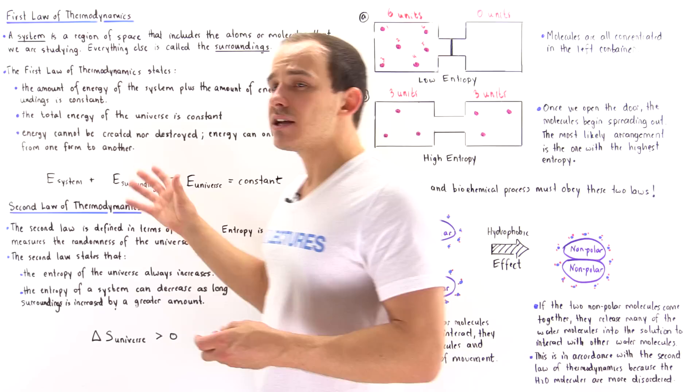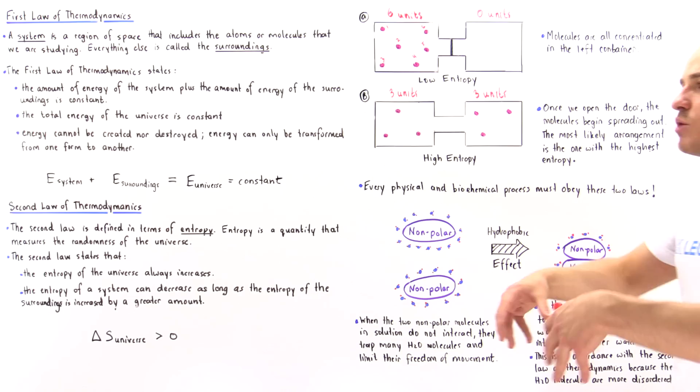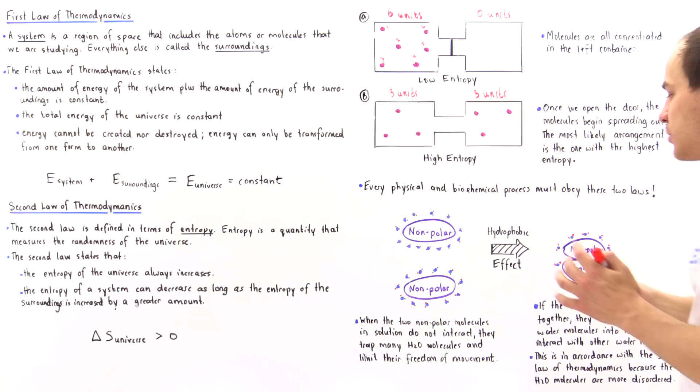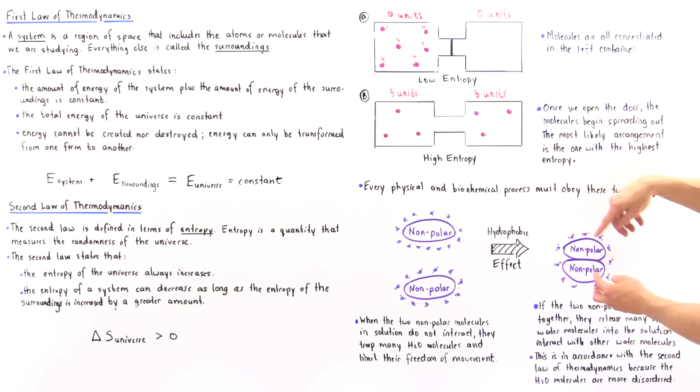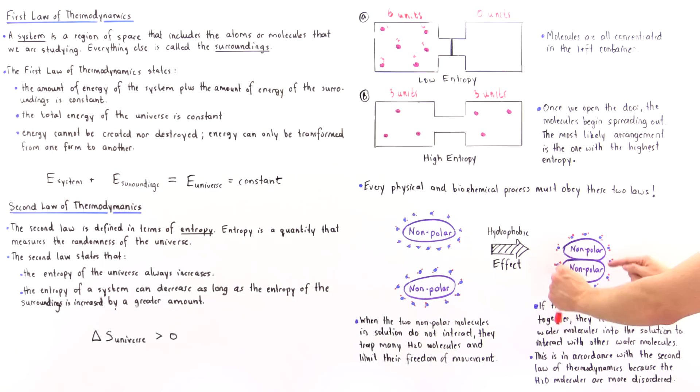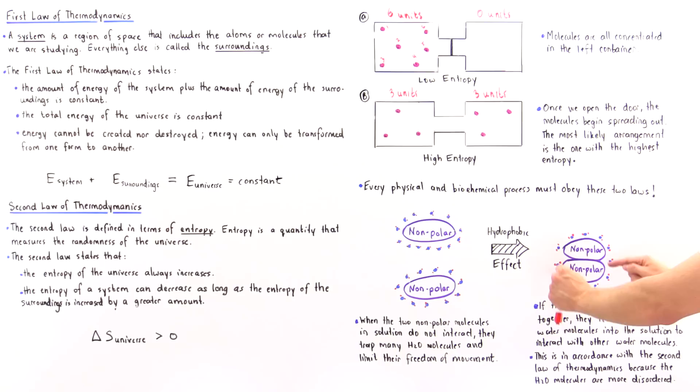Because of the second law of thermodynamics — because when given a chance to, we want to increase the amount of entropy of our system and our universe in general — we have the hydrophobic effect take place. These non-polar molecules will tend to aggregate, because by aggregating and combining, we decrease the number of water molecules found around the surface by decreasing the surface-to-volume ratio.